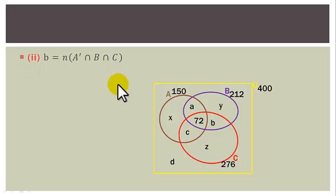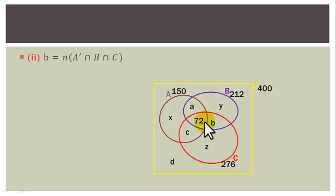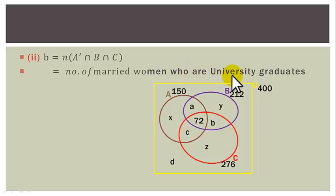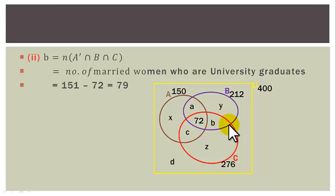Question 2: Region B (B∩C outside A) represents married women who are university graduates. This equals |B∩C| − 72 = 151 − 72 = 79.